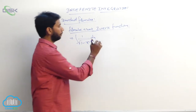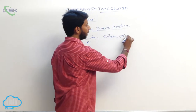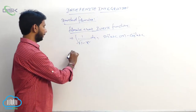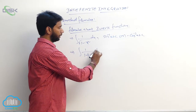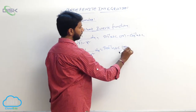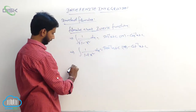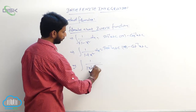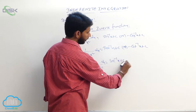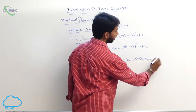Integral of 1/√(1 - x²) dx equals sin⁻¹x plus constant or minus cos⁻¹x plus constant. Integral of 1/(1 + x²) dx equals tan⁻¹x plus constant or minus cot⁻¹x plus constant. Integral of 1/(|x|√(x² - 1)) dx equals sec⁻¹x plus constant or minus csc⁻¹x plus constant.